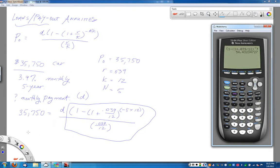So, copying everything over, I have 35,750 on the left equals D times on the right. I just figured that out to be 54.4323.